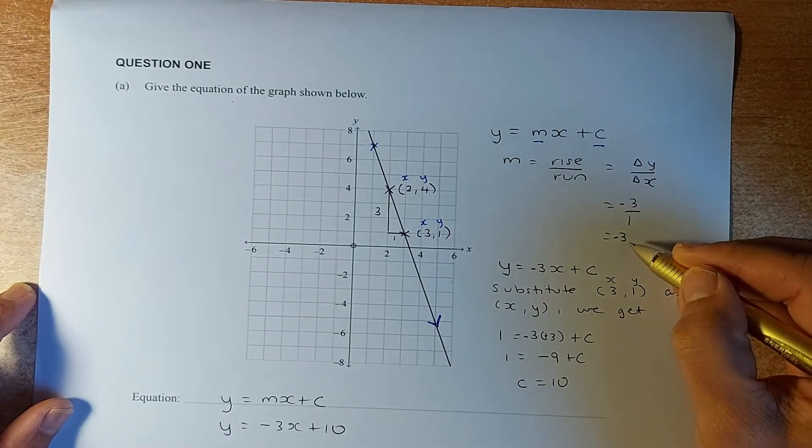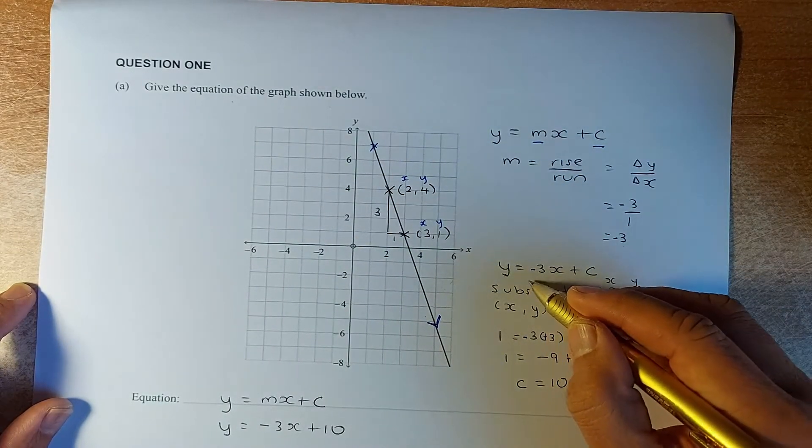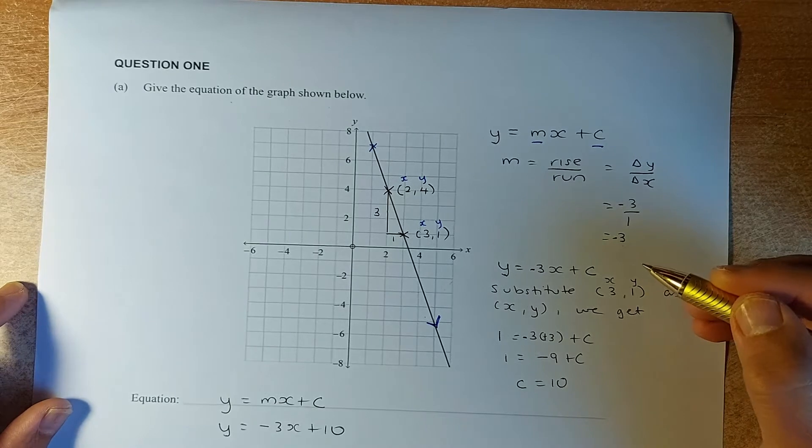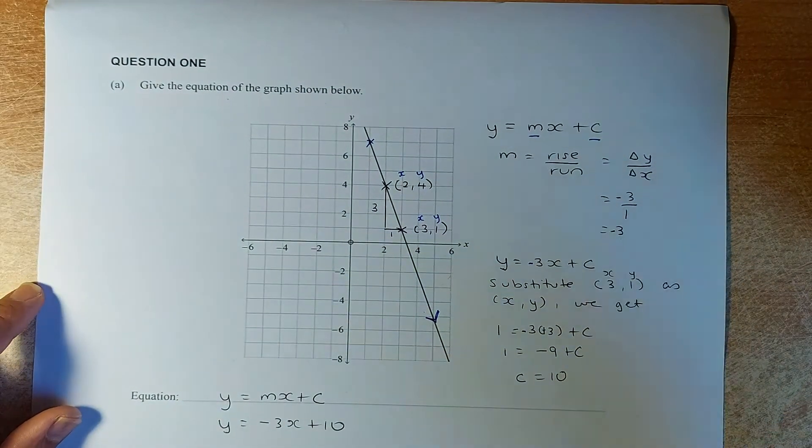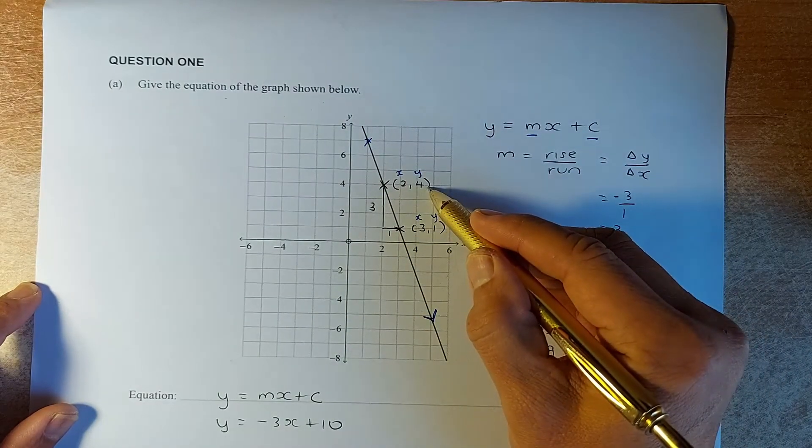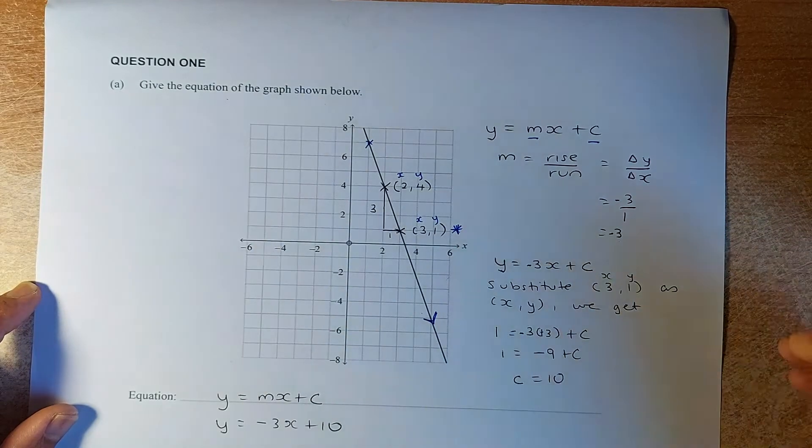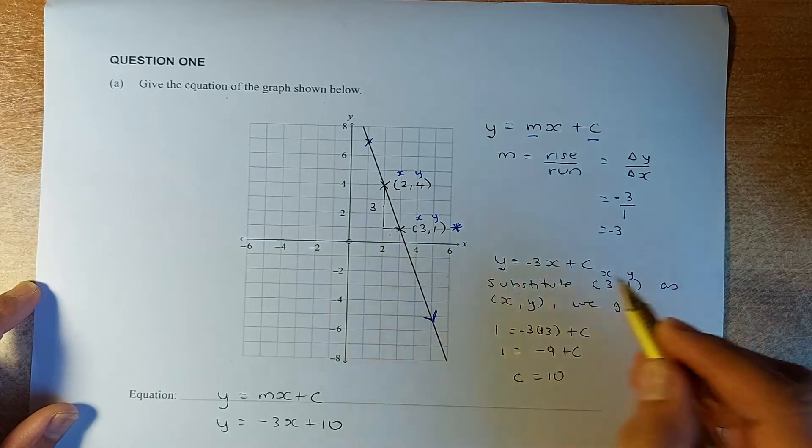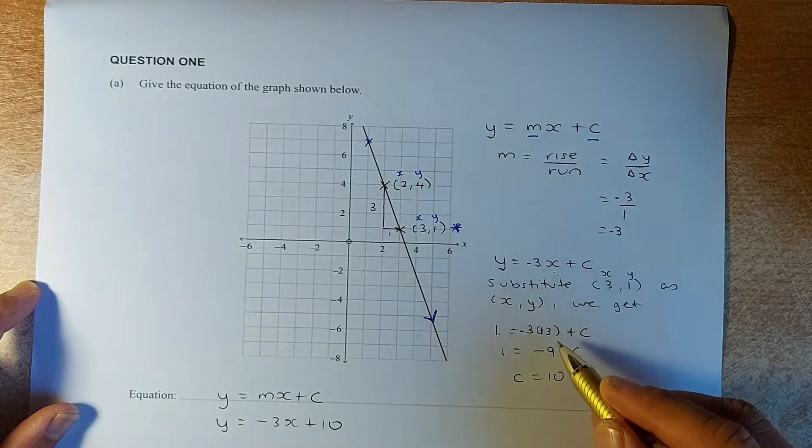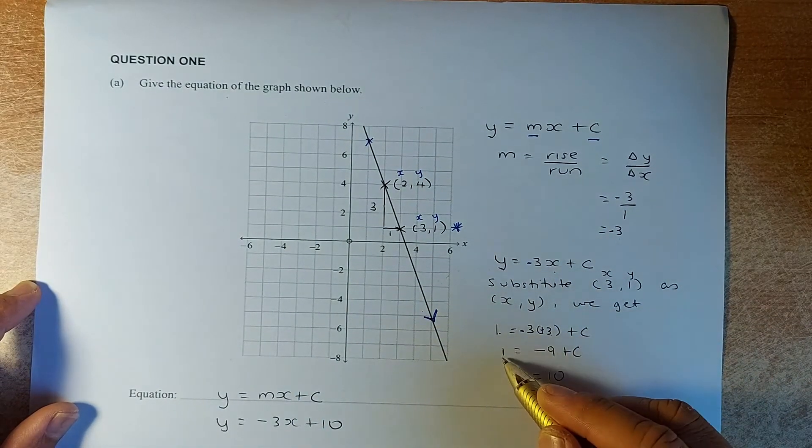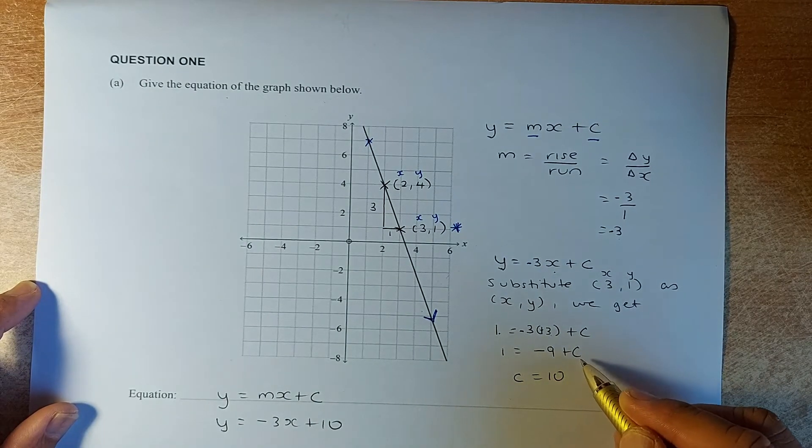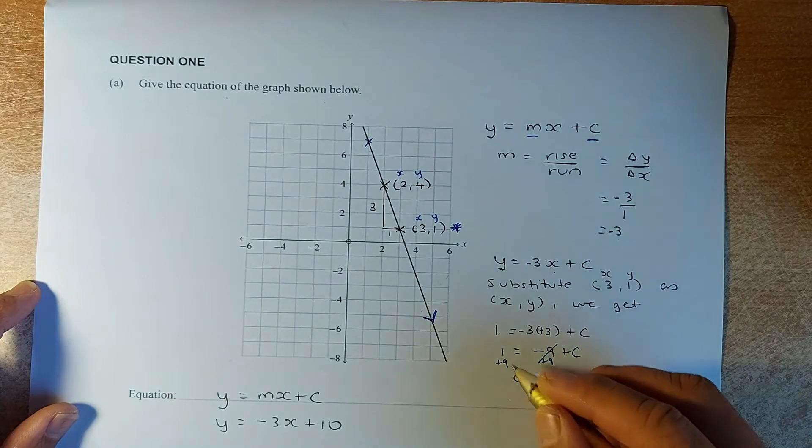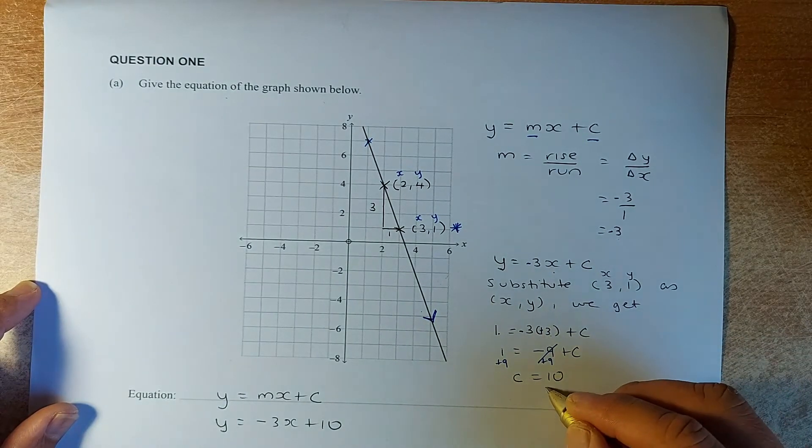So the gradient is negative 3. So we substitute negative 3 into that equation to y equals to negative 3x plus c. Normally, if you can see the y intercept, we can just put the c there. But unfortunately, for this case, we cannot find a y intercept. To do that, we do substitution. So we can substitute either using this coordinate or that coordinate. So suppose we have decided to use the second coordinate, which is 3, 1. So x is 3, y is 1. We substitute that number into this equation. Instead of y, we are going to replace by 1. Instead of x, we replace by 3 plus c. Then we expand it. 1 equals to minus 3 times 3 is negative 9 plus c. To get your c, you plus 9 on the left, you plus 9 on the right. The 9 will cancel out.